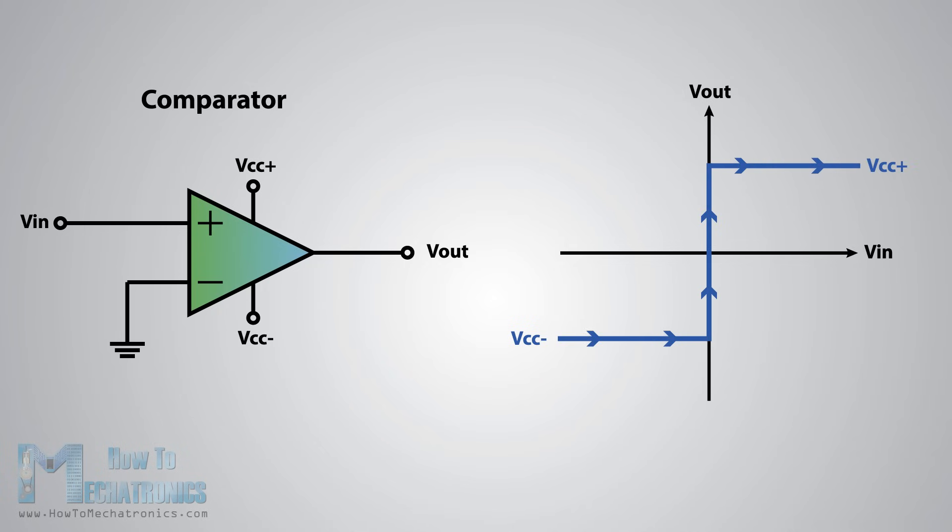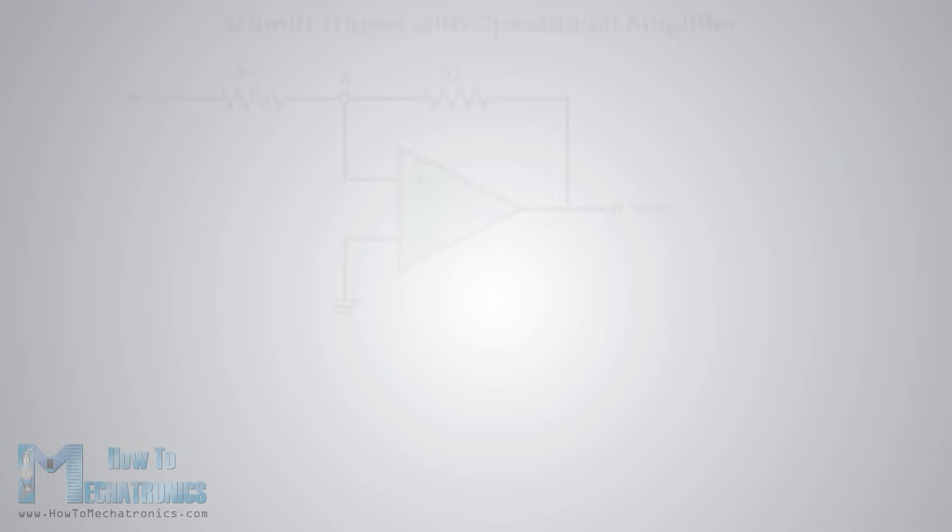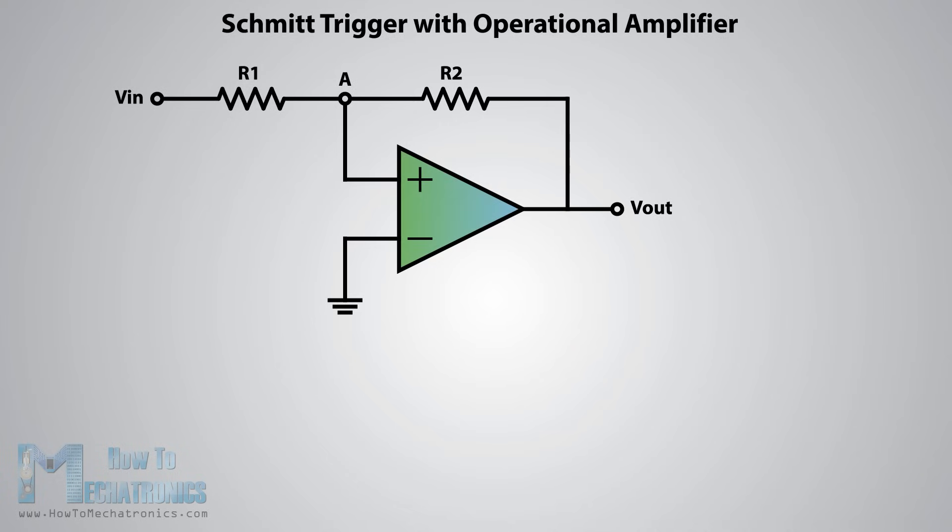Now if we add a positive feedback by connecting the output voltage to the non-inverting input with a resistor between them and another resistor between the VIN and the non-inverting input, we will get the Schmitt trigger.